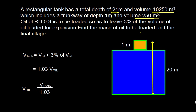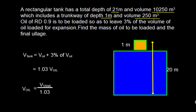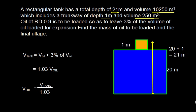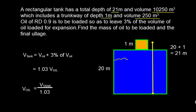The tank is rectangular in shape with a trunkway on top. The total depth is 21 meters, which means the rectangular portion is 20 meters and the trunkway is 1 meter. We don't yet know whether the oil level will reach up to the rectangular portion or up to the trunkway level — we'll figure that out shortly.